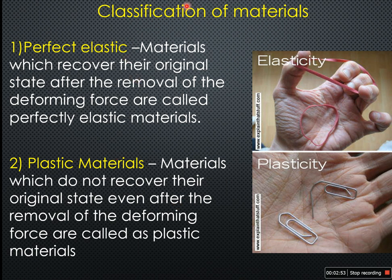Now, classification of materials. Materials are classified into two types: 1. Perfect elastic material, and 2. Plastic material.